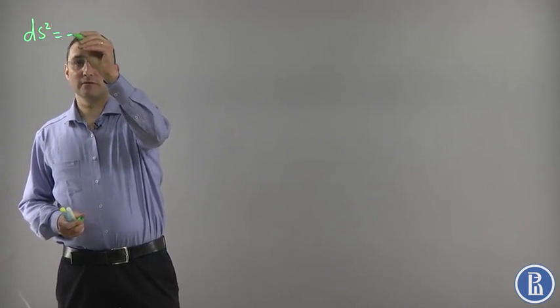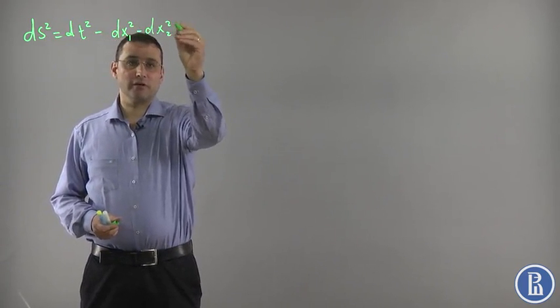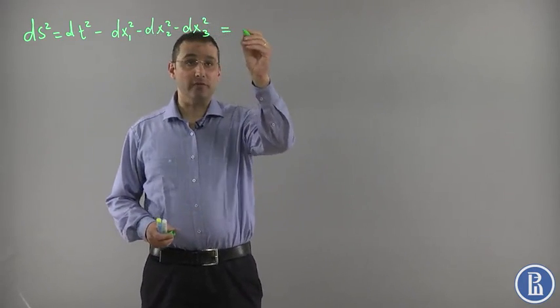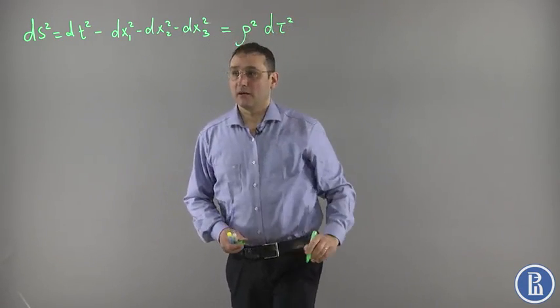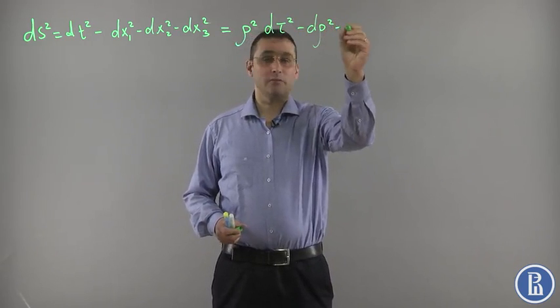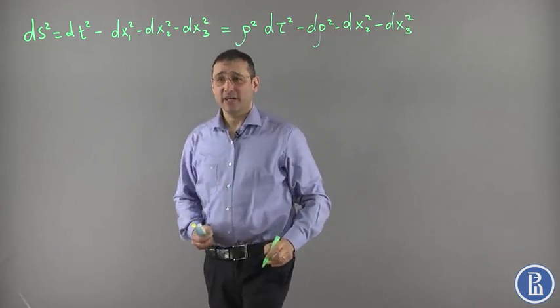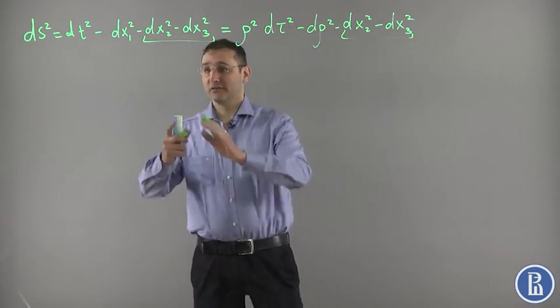Let me now describe the physical meaning of this transformation that we have made. Originally we had the Minkowskian metric: dt² minus dx1² minus dx2² minus dx3². And we have transformed to a new metric, which is called Rindler's metric: d rho² minus dx2² minus dx3². In all my drawings and discussion, I will ignore these coordinates which remain untouched during this coordinate change.